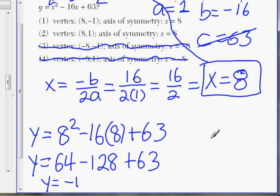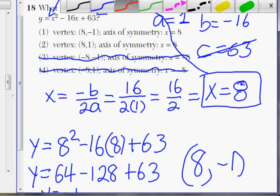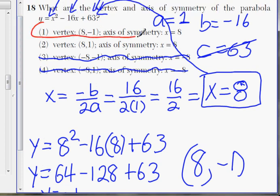And so the coordinate, x equals 8, y equals negative 1. So that would be choice 1. Vertex 8, negative 1.